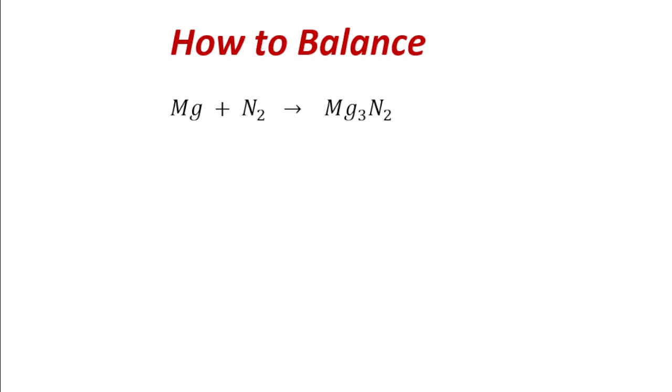In this video, we are going to learn how to balance a chemical equation. Let us start with this example. Let us say we react magnesium with nitrogen, it gives magnesium nitride.